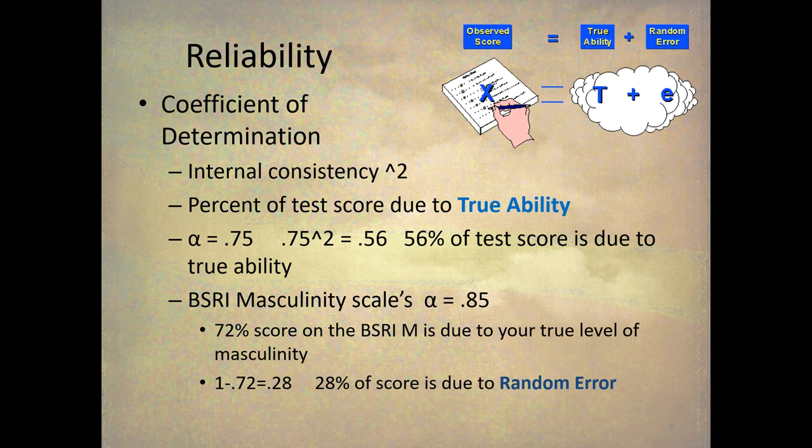And so when we get up to 0.9, think about this, 0.9 squared is 0.81. So that's 81% of the test score is due to true ability. And 1 minus 0.81 is, let's see, 19. 19% of the score is due to random error. And that's pretty good.